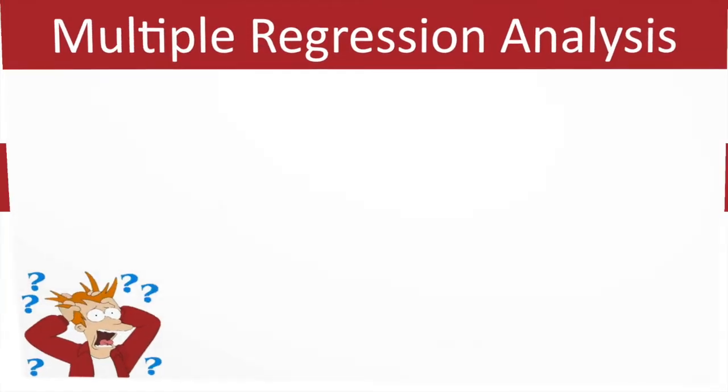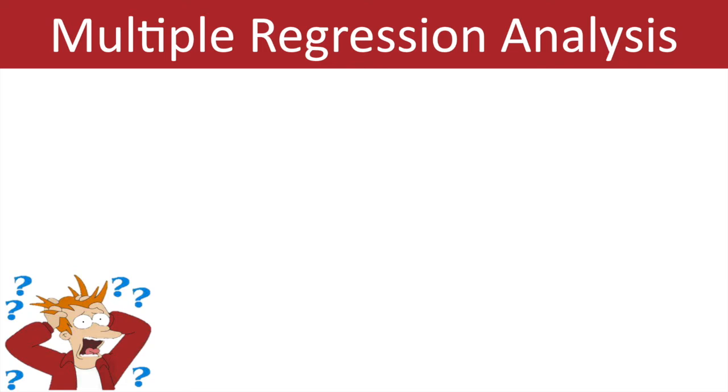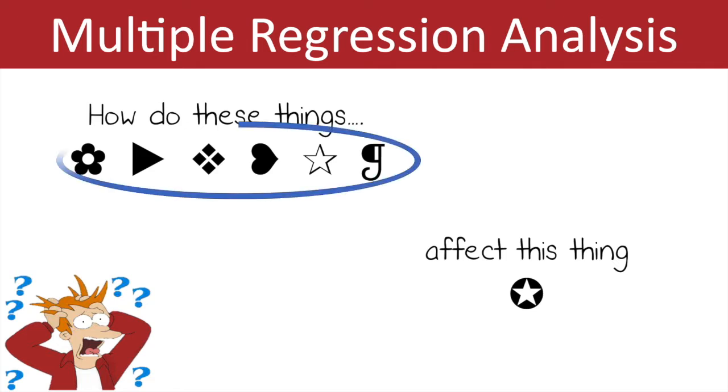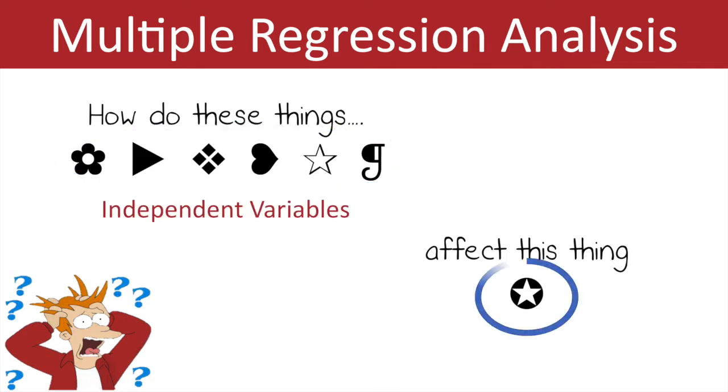Multiple regression analysis simply answers this question: how do these things, whatever they are, affect this thing, whatever it is? These things are called independent variables, and this thing is called the dependent variable. The dependent variable is what you're testing or what you're curious about.